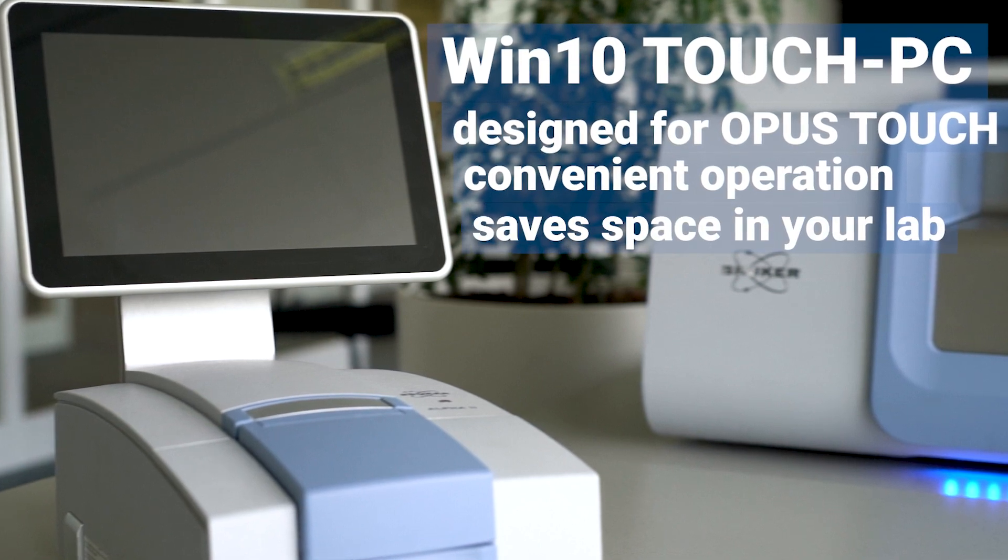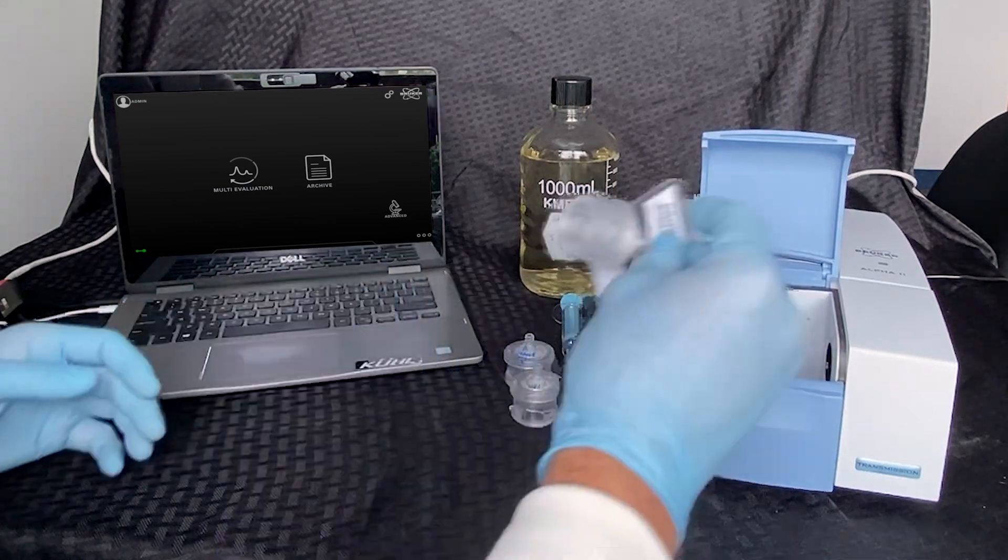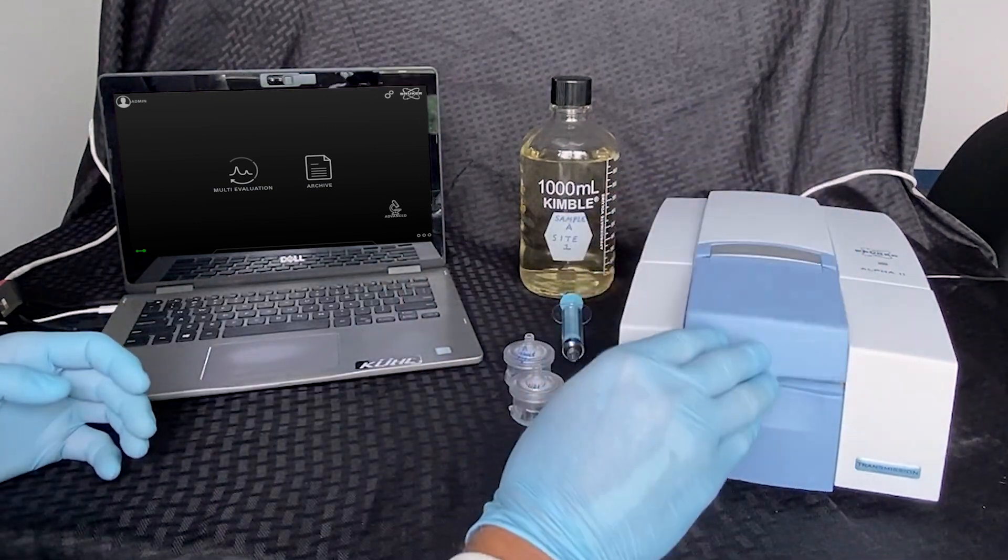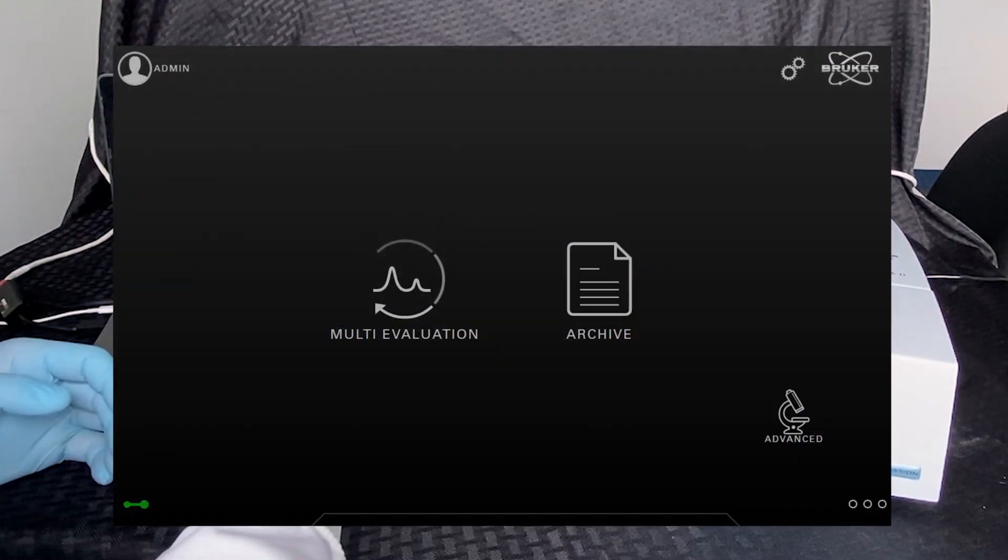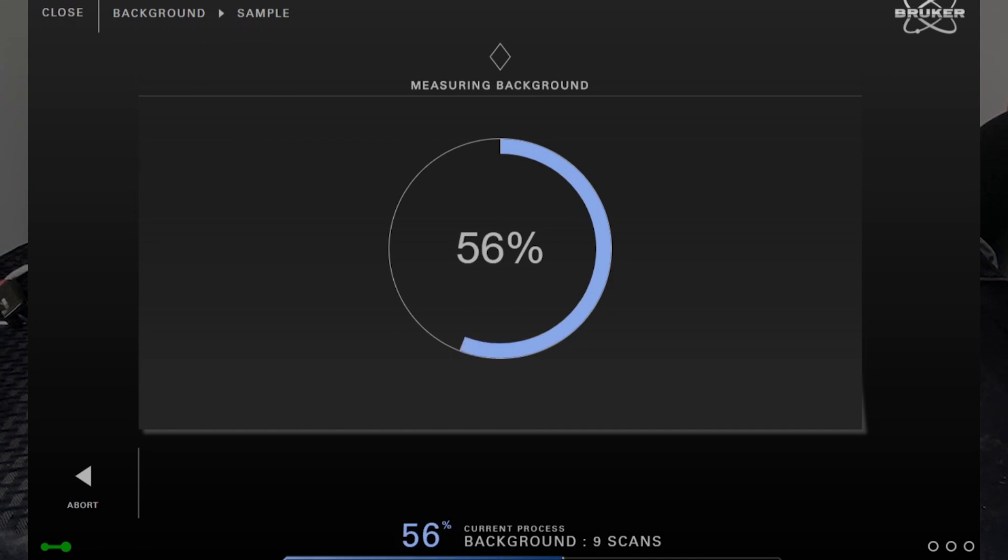But let's continue. To receive a baseline for our analysis, we first place a blank extractor into the spectrometer. By clicking multi-evaluation and measure background, we commence. Depending on the environmental conditions, this background can be reused multiple times.